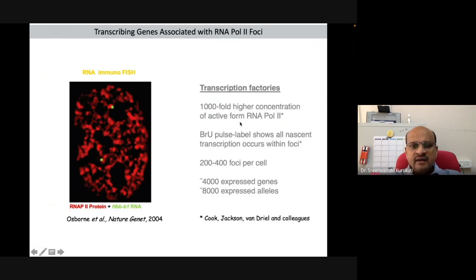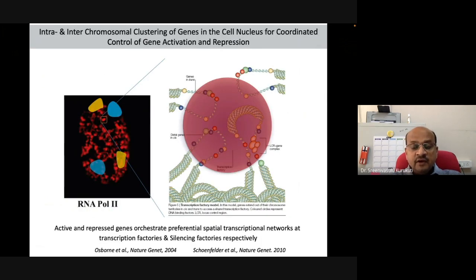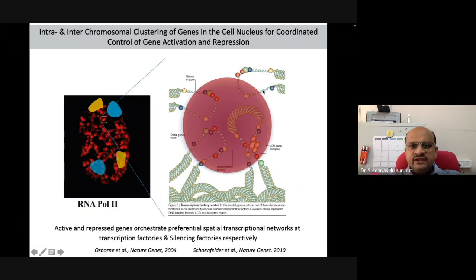These RNA polymerase II-enriched centers have a thousand-fold higher concentration of the active form of RNA polymerase II. BRU pulse labeling in live cell dynamics confirms that they really exist. On average, 200 to 400 foci are seen per nucleus, and considering 4,000 expressed genes and 8,000 expressed alleles, it is most likely that each focus is a center where multiple genes are being transcribed. This has been analytically shown by labeling multiple genes with multiple colors and simultaneously detecting DNA, RNA, and protein — demonstrating that these large RNA polymerase II foci are centers where genes from the same or different chromosome territories cluster three-dimensionally, along with RNA polymerase II, the holo-enzyme complex, and accessory factors, forming dedicated centers where multiple genes are actively transcribed.